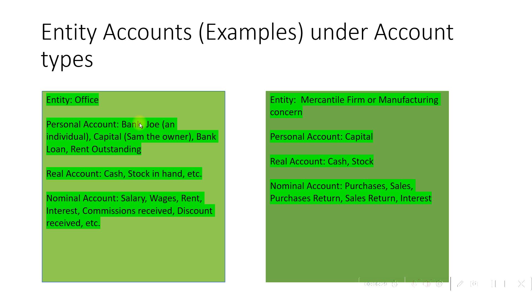For example, in the case of an office entity, personal accounts may include bank, an individual like Joe, capital account, bank loan, rent outstanding, etc. Real accounts include cash and stock in hand. Nominal accounts for an office include salaries, wages, rent, interest received, commissions received, and discount received. Each type of account has its own accounting rules: personal account — debit the receiver, credit the giver; real account — debit what comes in, credit what goes out; nominal account — debit all expenses or losses, credit all incomes and gains.